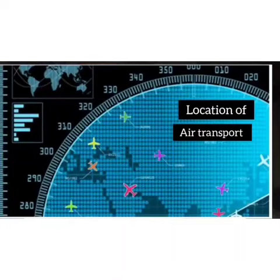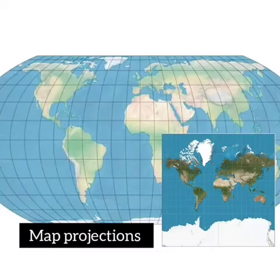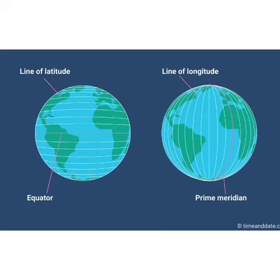Other examples of coordinate geometry are the location of air transport, map projections, and latitude and longitude.